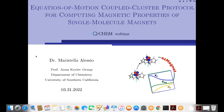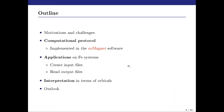Today I will be talking about our new developments for computing macroscopic magnetic properties in single molecule magnets, starting from equation of motion coupled cluster calculations. In today's talk, I will first introduce our computational protocol, which is implemented within the EasyMagnet software. Then I will illustrate the capabilities of our scheme by applications on a set of iron compounds, and I will illustrate how we provide an interpretation of the computed quantities in terms of orbitals.